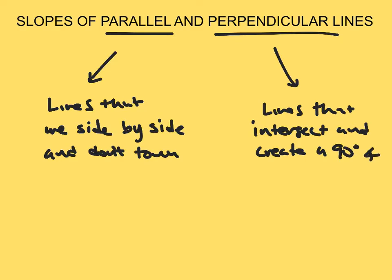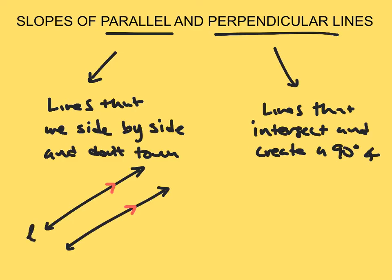If I were to draw a picture of parallel lines, I would simply draw two parallel lines like so. Make sure we've got lines here. And to show that they're parallel, what we want to do is label them with these arrows. I'm going to call this line L and this line M. And we would say that line L is parallel to line M.